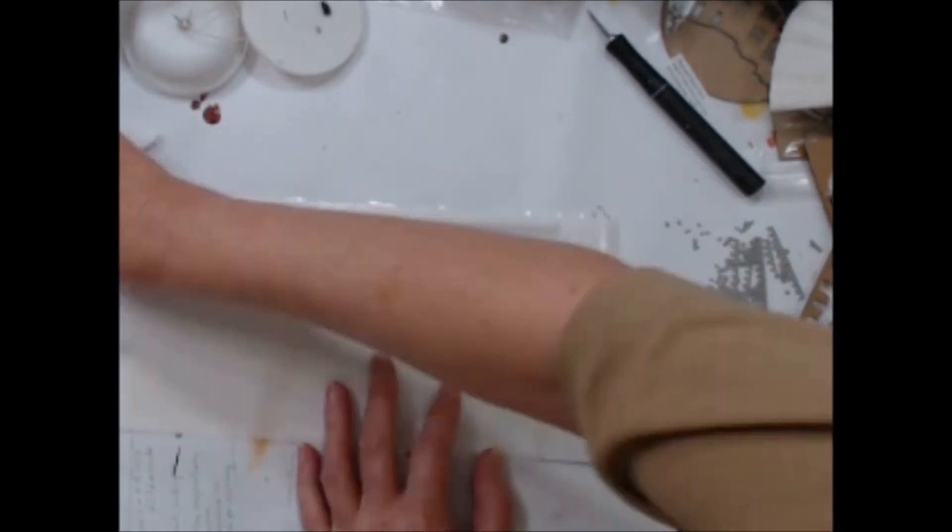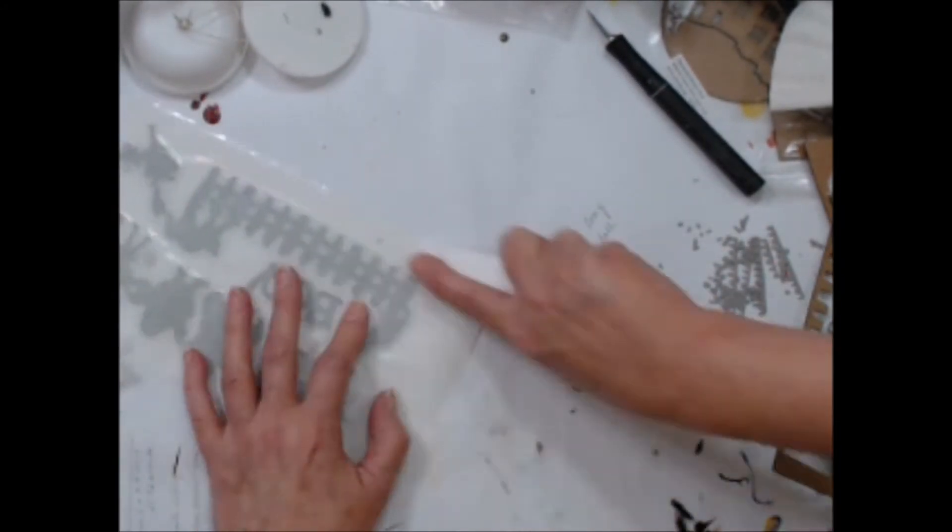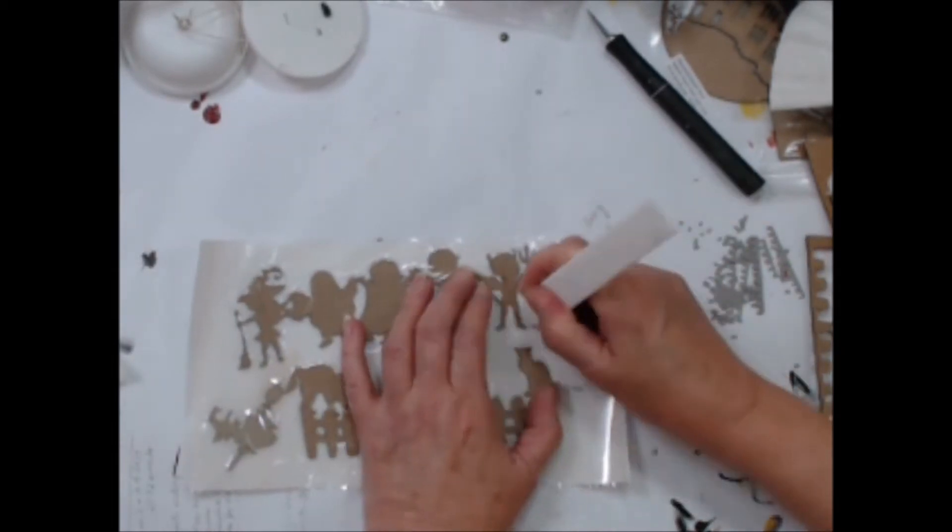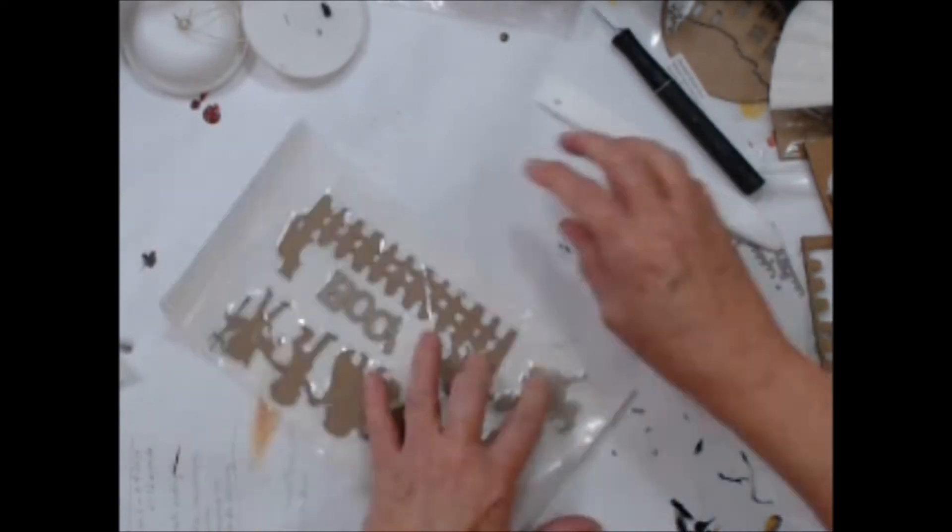I highly recommend that when you use your Xyron machine, you use a bone folder to burnish the adhesive to both sides of the paper as well as the chipboard before removing that clear cellophane cover.